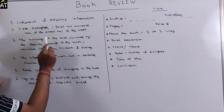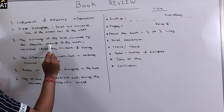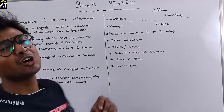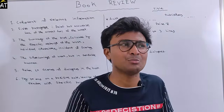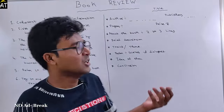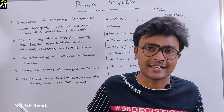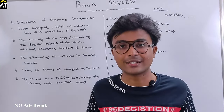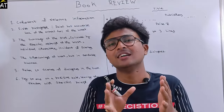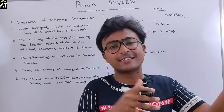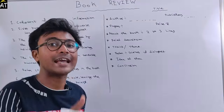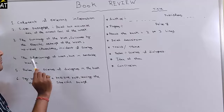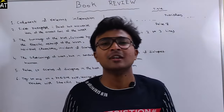You need to include the summary of the plot, followed by specific aspects of the book — individual characters, incidents, and scenes. Mention the individual characters from the book and include key scenes. Also give a short outcome of the story, but in a sensible manner.